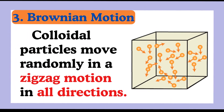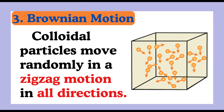Three: Brownian motion. The dispersed particles in colloids exhibit random, continuous motion known as Brownian motion, due to collisions with molecules of the dispersing medium. No matter how long a colloid is left undisturbed, the particles never fully rest — instead, they exhibit constant zigzagging movement at the microscopic scale.